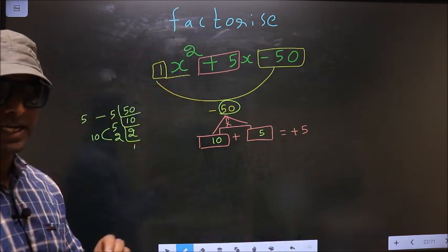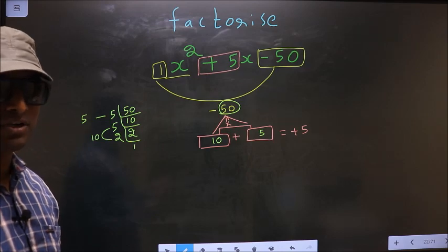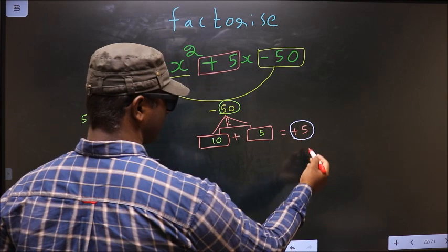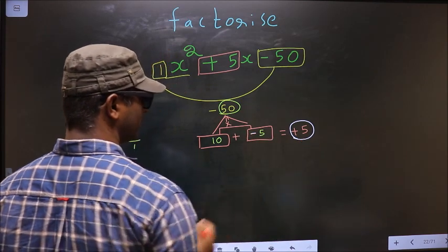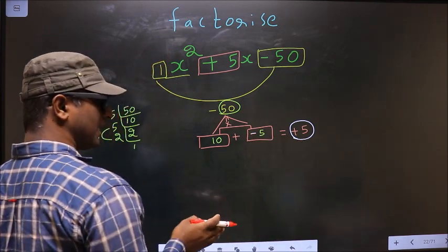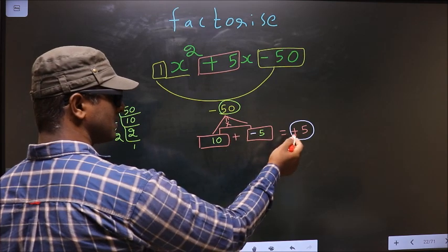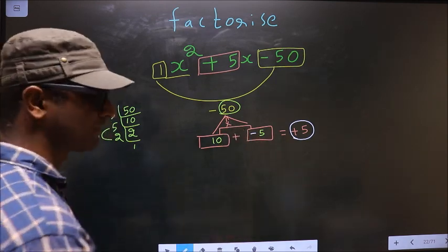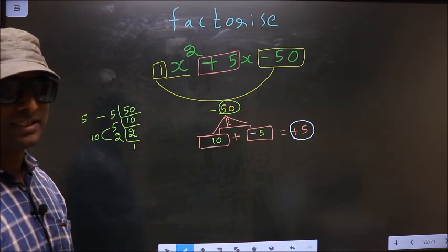Now we should adjust the signs. What I mean is, to get +5 I should put negative before 5 such that 10 - 5 is +5. 10 × -5 is -50. So now we have adjusted the signs.